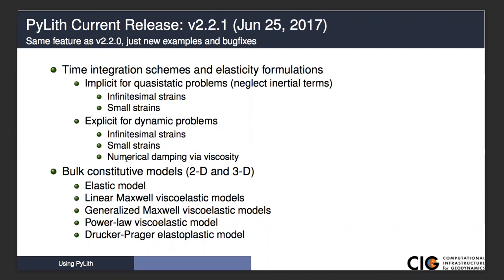Our boundary and interface conditions—we have a relatively general formulation for time dependence in our Dirichlet and Neumann boundary conditions, as well as our point forces. We have prescribed slip fault interfaces where we can do multiple ruptures. We'll show an example of that later today. Tomorrow we'll talk about dynamic fault interfaces. We can handle fault interfaces with T intersections. We'll discuss that this afternoon, and gravitational body forces.